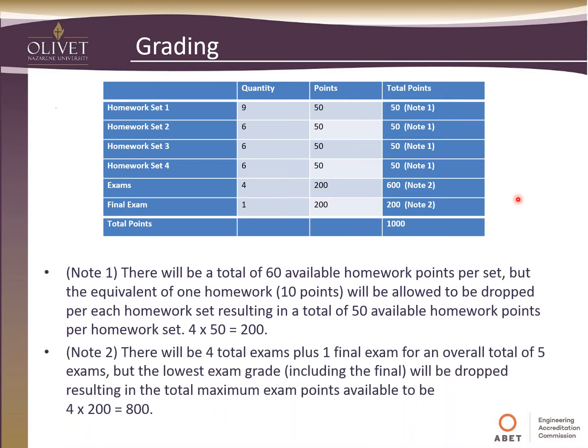There are four exams and one final — five exams total — where the final is comprehensive. I will allow the lowest grade of these five, including the final, to be dropped. That keeps four exams at 200 points each for 800 points. Adding the 200 homework points gives a total of 1,000 points for the course.